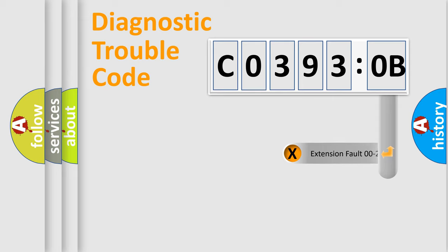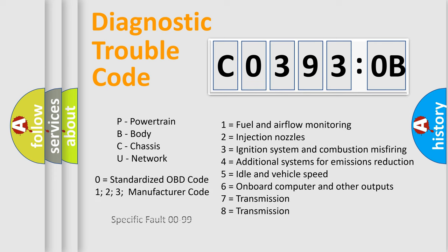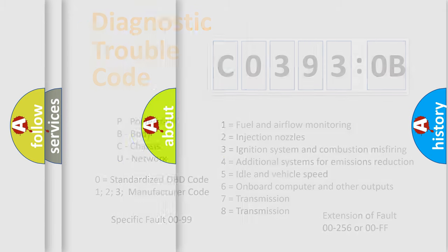The add-on to the error code serves to specify the status in more detail, for example, a short to ground. Let's not forget that such a division is valid only if the second character code is expressed by the number 0.